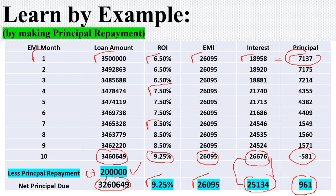The question then comes: which option is better — principal prepayment or EMI increase? In my opinion, either of these options can be worked out based on what is convenient to the borrower, or there can be a combination of both. The call is to be taken by the relevant borrower. You can also reach out to your bank or financial institution and tell them you want a solution in either format or a combination, and they will tell you how your loan can come out of negative amortization.